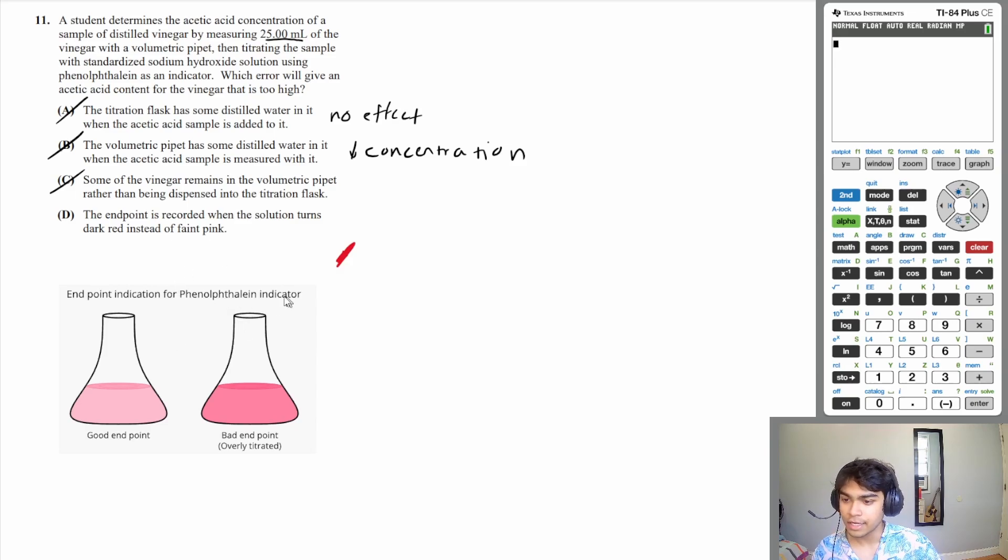It does turn like a dark purple if you add more base than you should. When you use phenolphthalein as an indicator, you should record it when it is a faint pink color. But if you keep adding more base, it will get a darker pink color. And that's not what you need. If you have a dark red or I guess a dark pink, then that means you've added too much of your base. You've added too much sodium hydroxide.